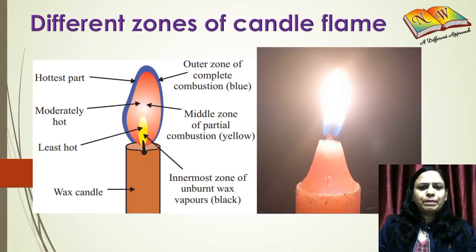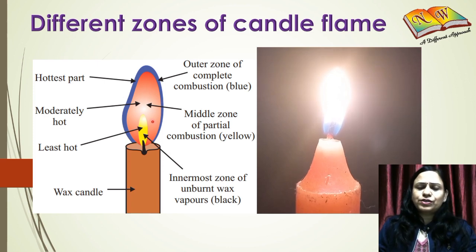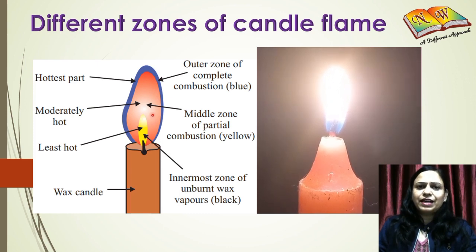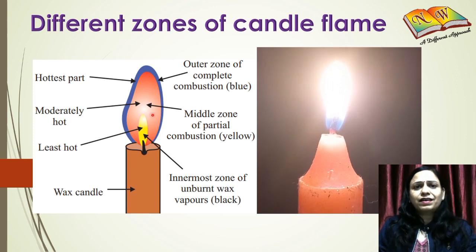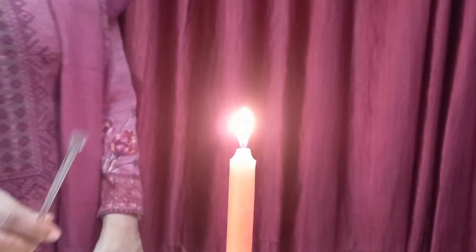The middle part of the flame is the most luminous part, and this is the zone where incomplete combustion of the wax vapors is taking place. If you hold a glass rod or glass plate in the middle zone of the flame, you will find it getting deposited with black colored soot, showing the evolution of black carbon particles. This part is moderately hot.